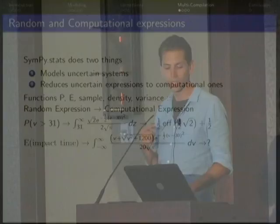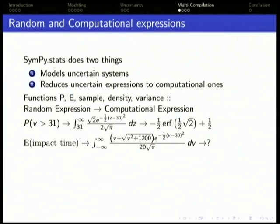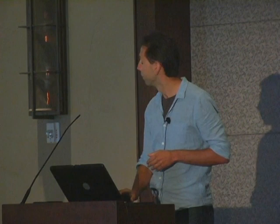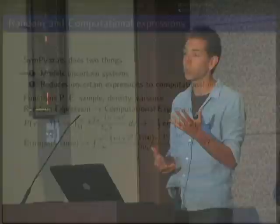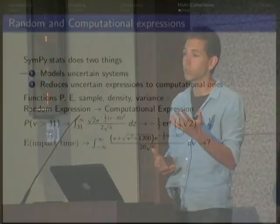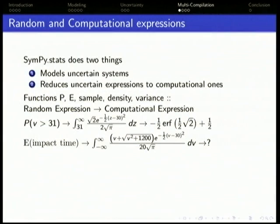I want to separate out the definition of the problem from the method of solution. SymPy Stats has tried to do this pretty well. This is sort of a shtick that I have now. We build these random expressions with this graph, and then we have these functions: probability, expectation, we can take samples, few densities, variances, some others. Those convert random expressions into some kind of computational expression. That computational expression is then often handed off to SymPy, but that can change.